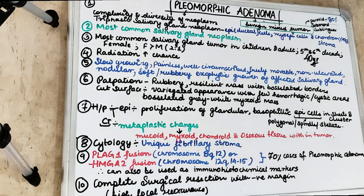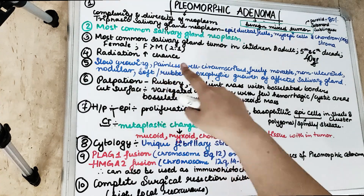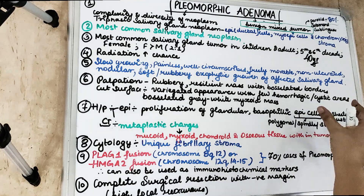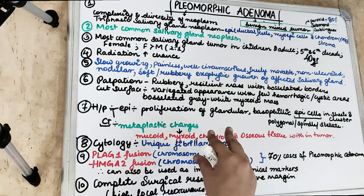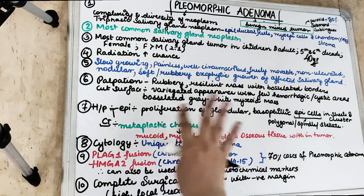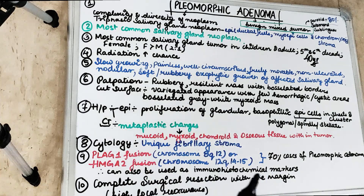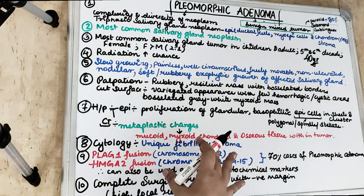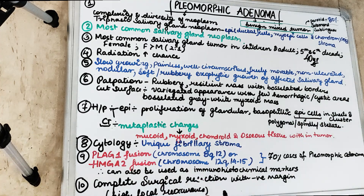Unlike other tumors which have a tendency to get fixed, these are freely movable — except again the cylindroma, which we will cover in upcoming videos. So this is a slow growing, painless, well-circumscribed, freely movable, non-ulcerated growth. It is a slow growing, well-delineated, nodular, exophytic growth that can affect any salivary gland, most commonly the parotid. The surface is non-ulcerated and smooth and lobulated. The patient will not complain of pain unless there is secondary infection. The lesion takes several years to grow up to one inch in size.